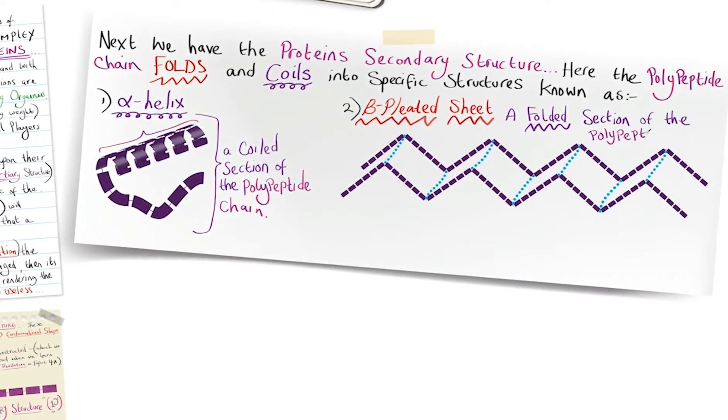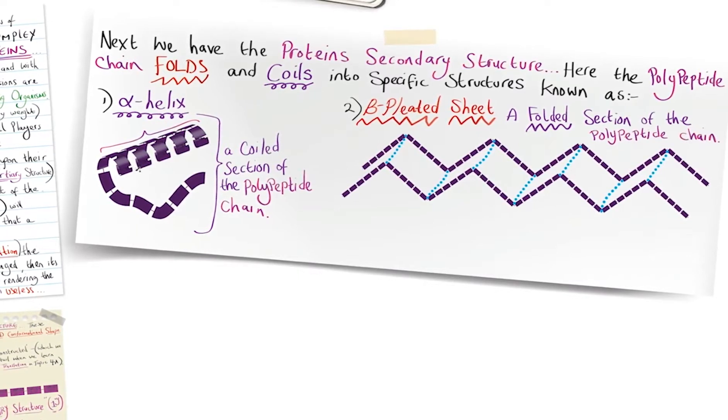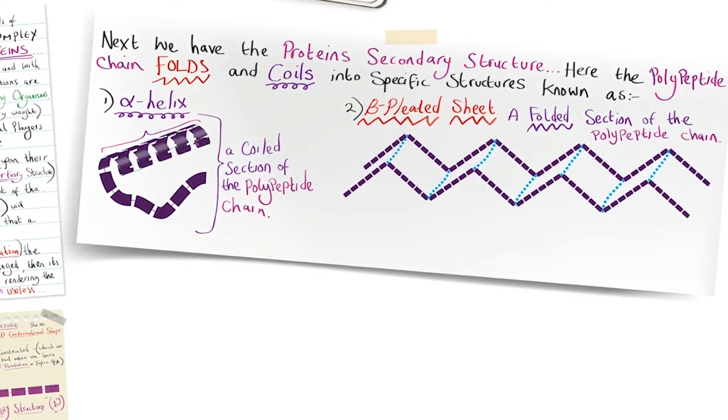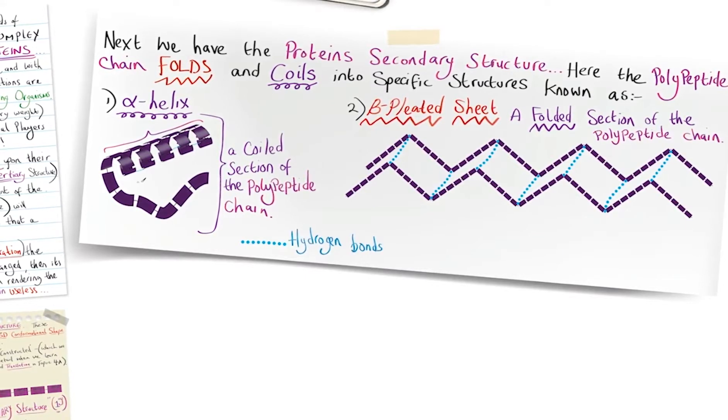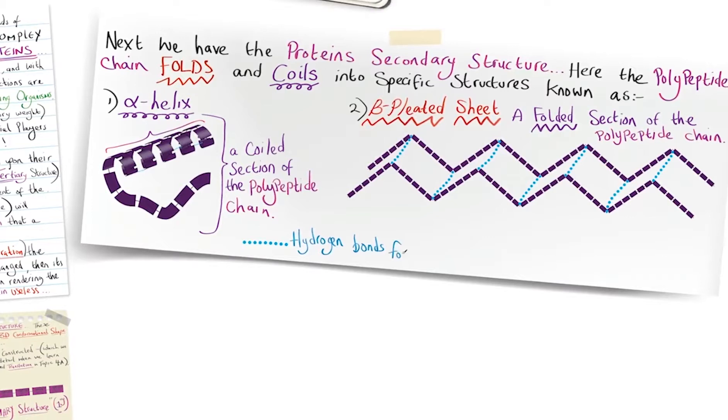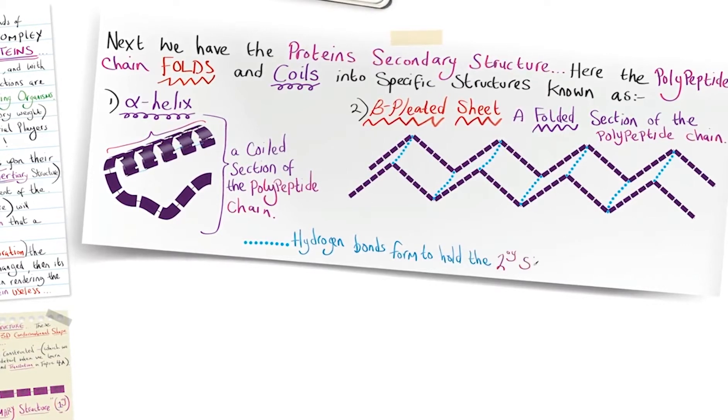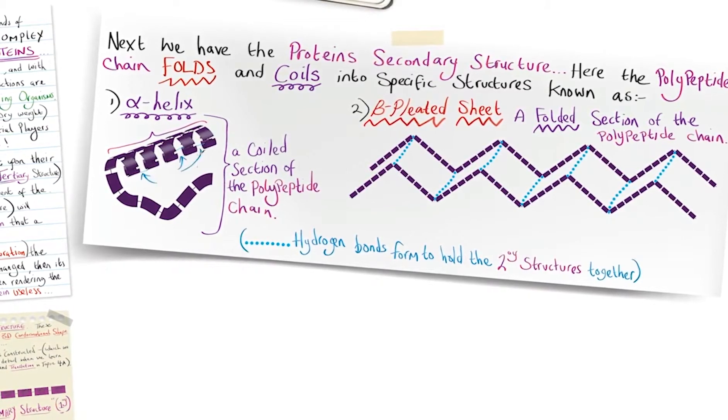Notice that on each of these structures, the alpha helix and the beta pleated sheet, we have hydrogen bonds represented as dotted blue lines, which form to hold the secondary structures together.